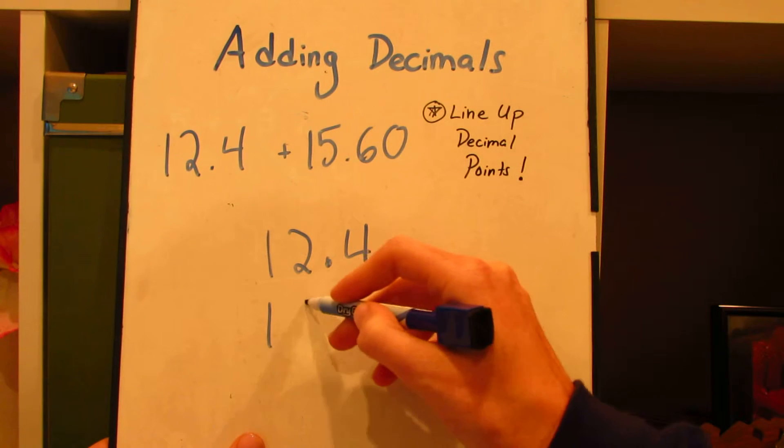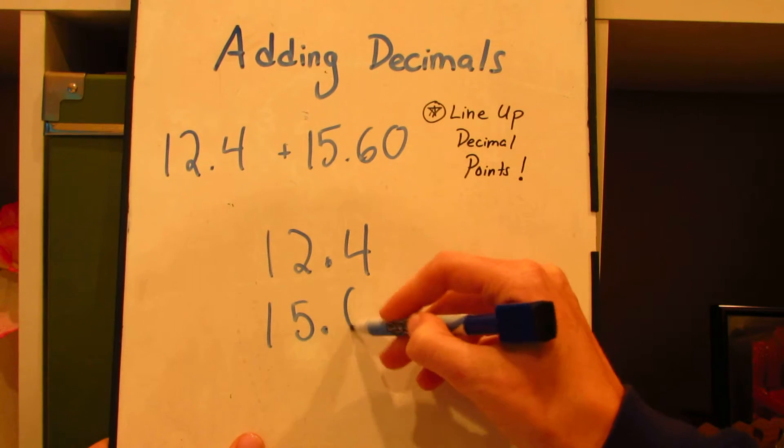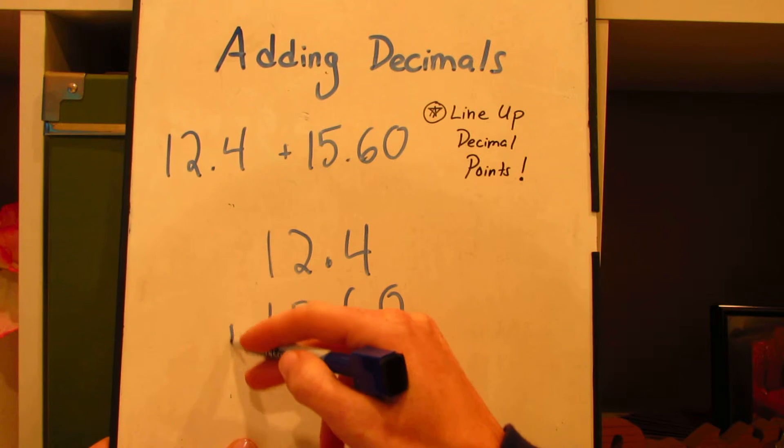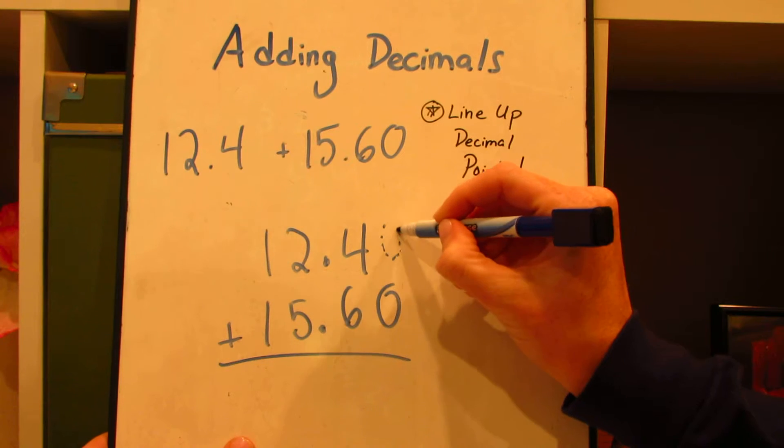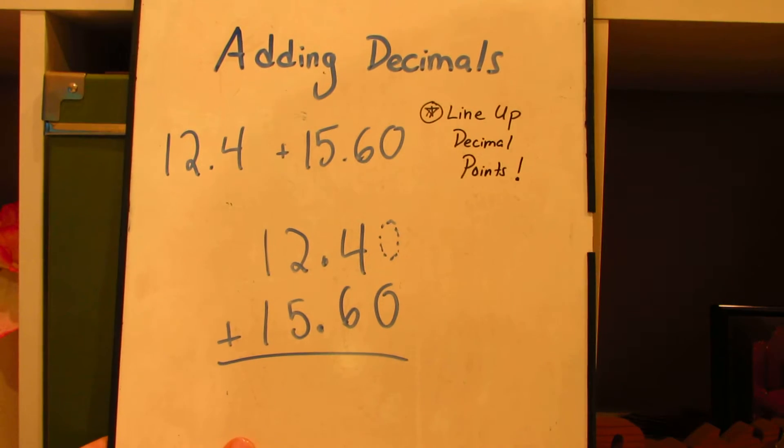12 and 4 tenths, 15 and 60 hundredths. Again, what you may want to do is annex a 0 right here as a placeholder to help you add.